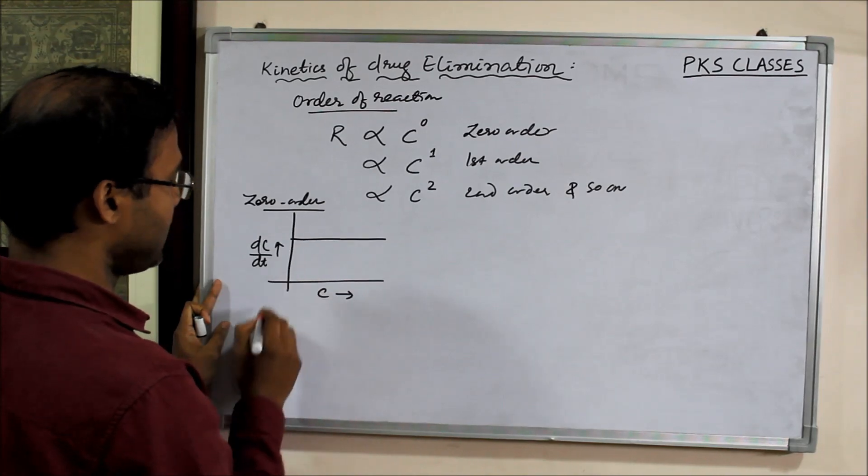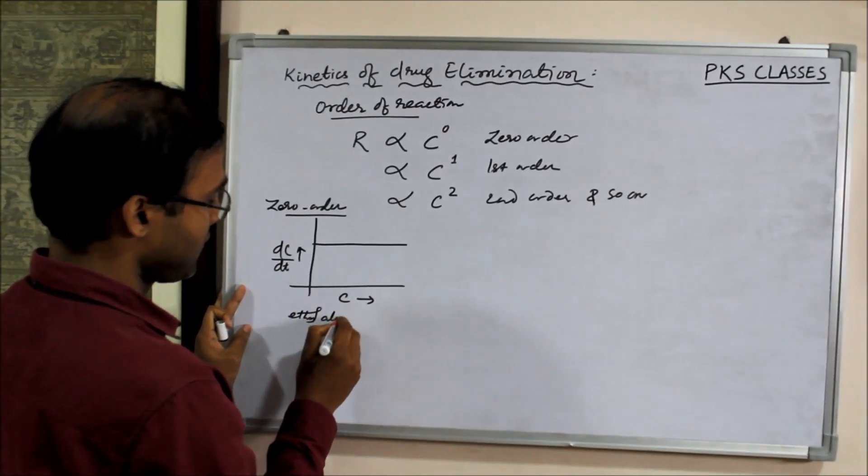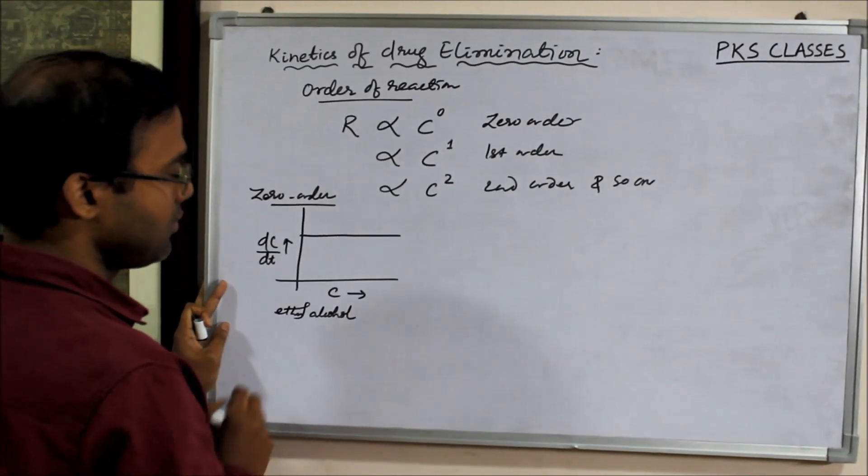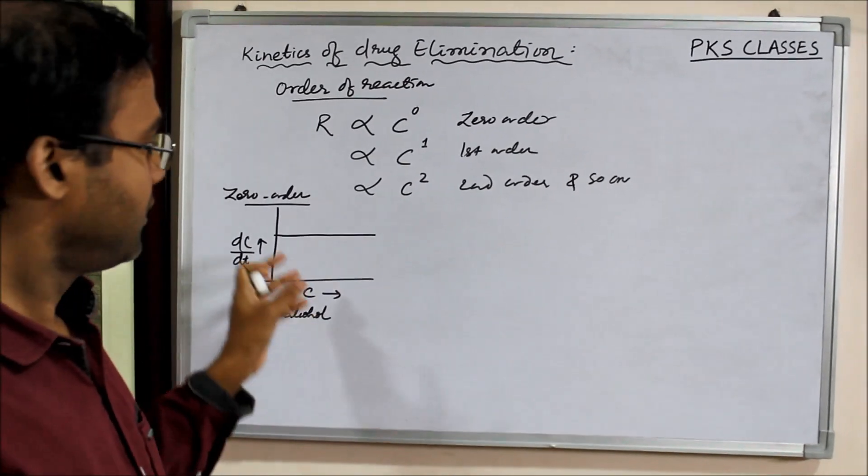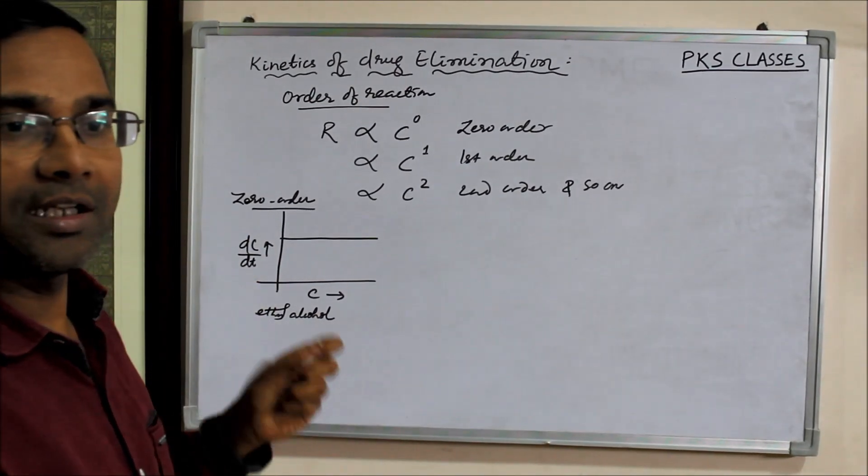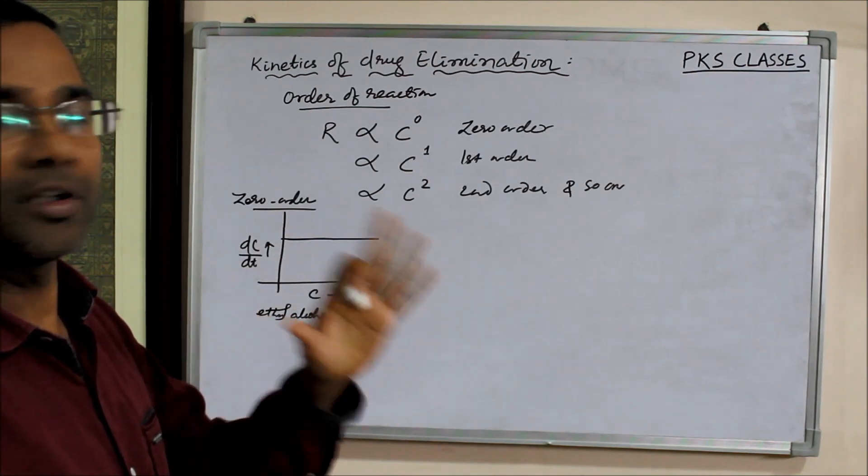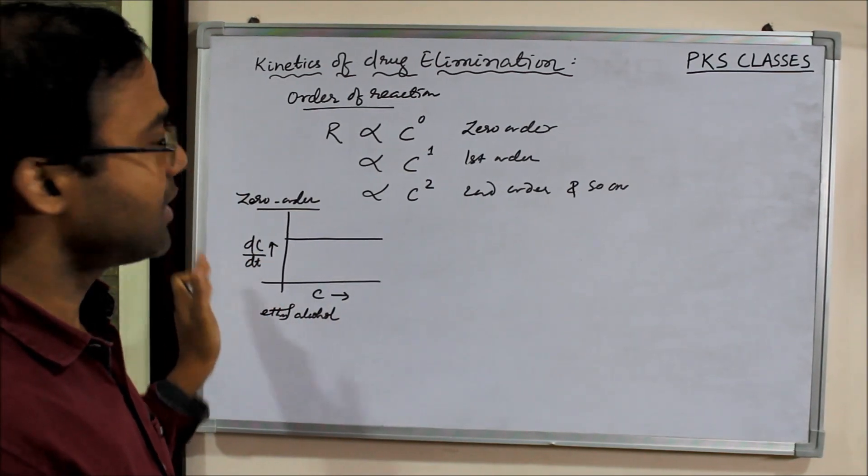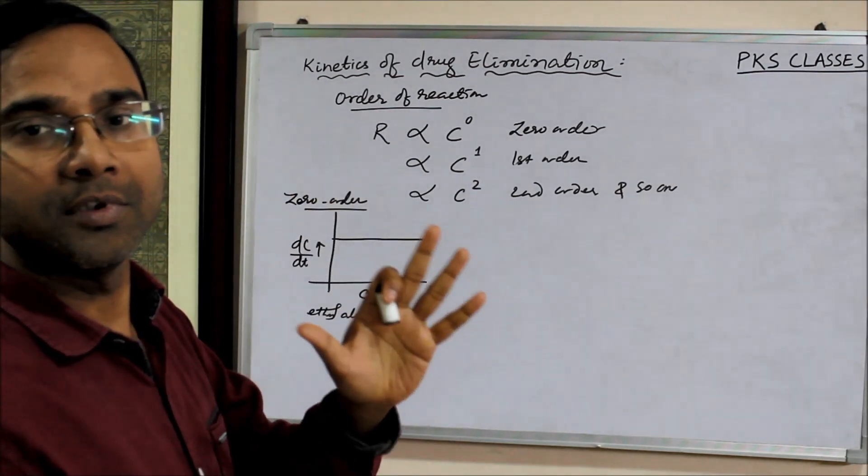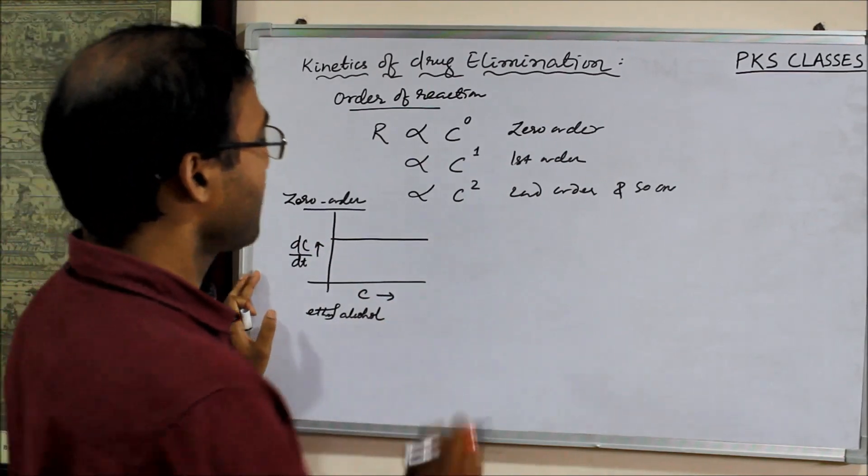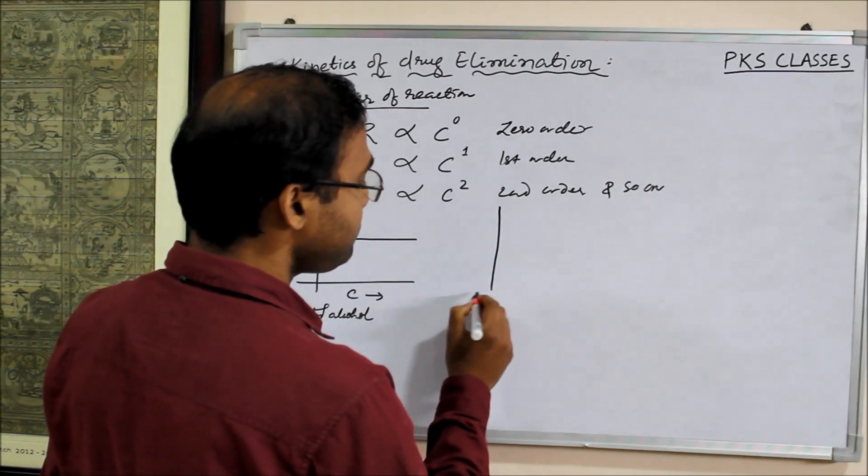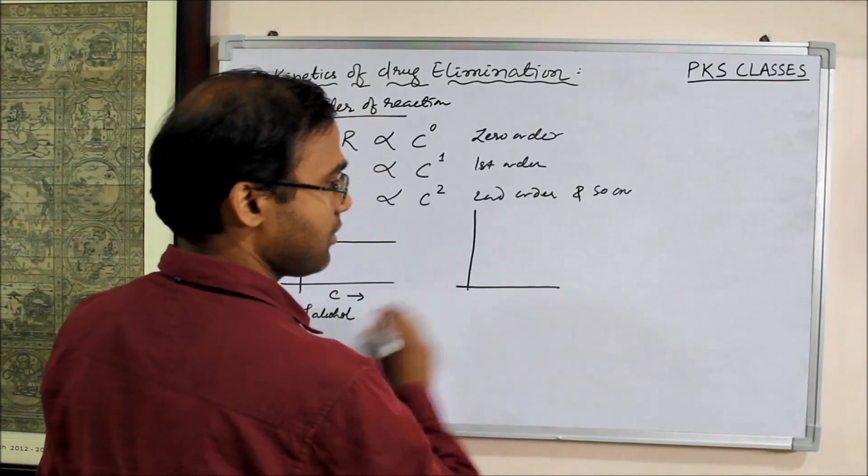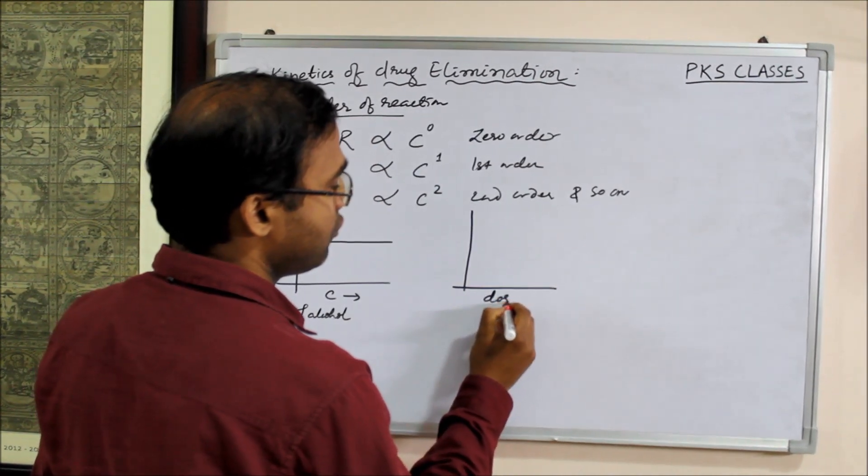For example, ethyl alcohol. In alcoholic patients, the amount of ethyl alcohol eliminated is constant per unit time. That's why it takes a specific amount of time to be eliminated from the body.